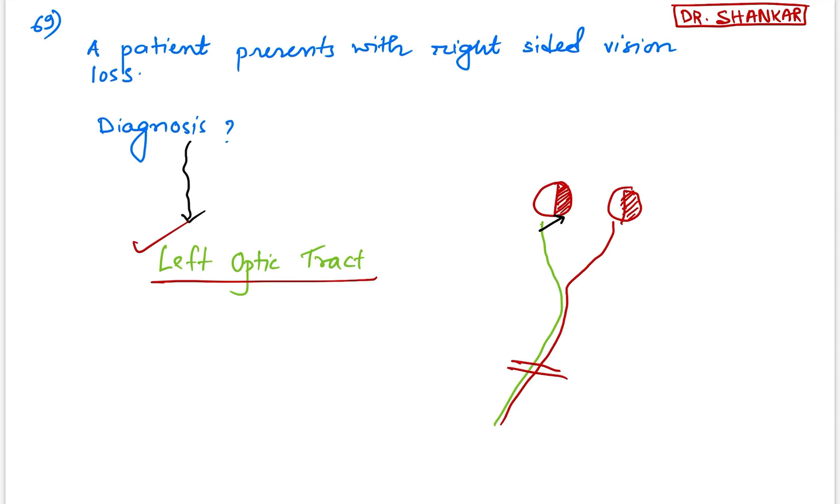If there is any lesion, then nasal field vision is lost from left side and temporal vision is lost from right side. So this is right-sided vision loss. Right-sided vision loss homonymous hemianopia. So right-sided homonymous hemianopia occurs because of left optic tract lesion.